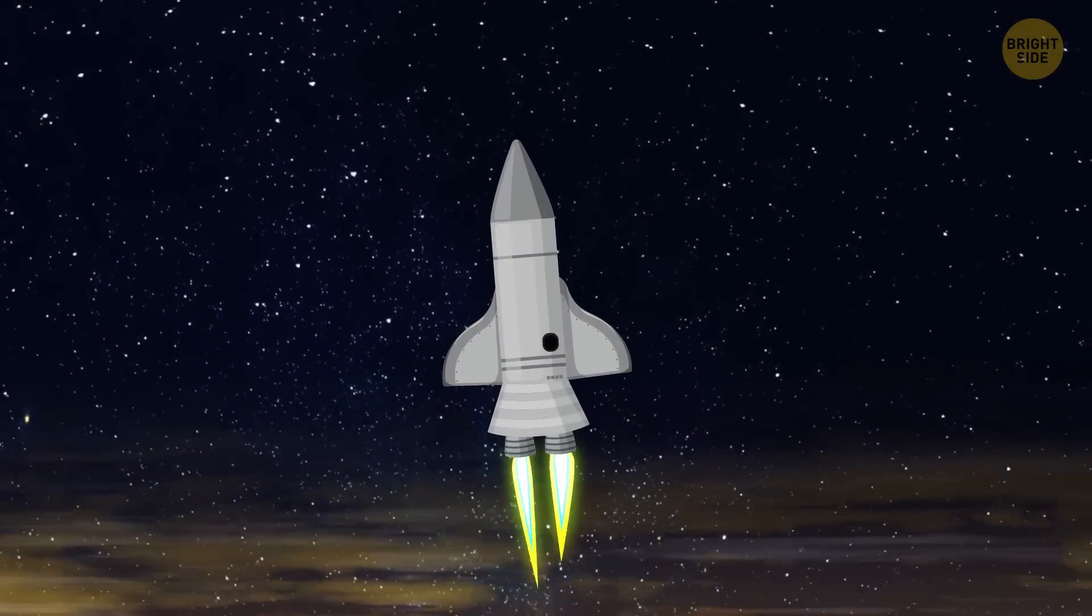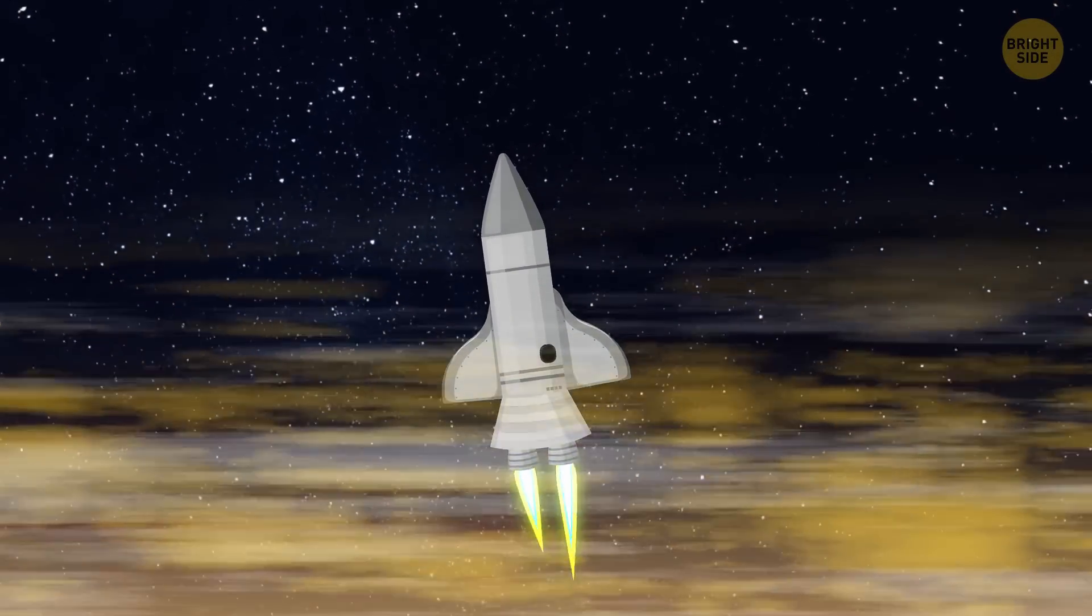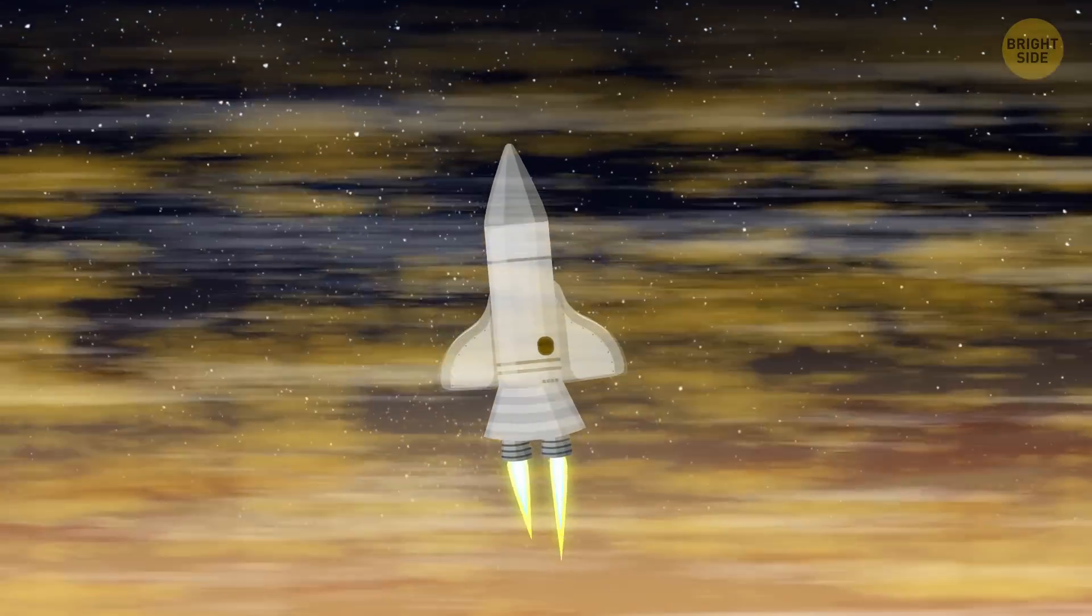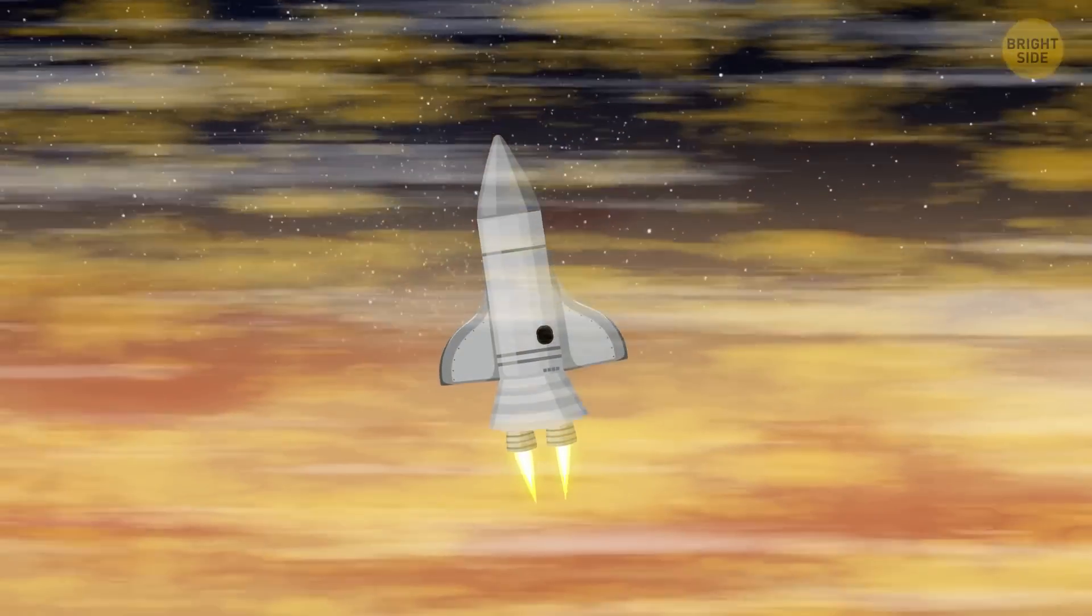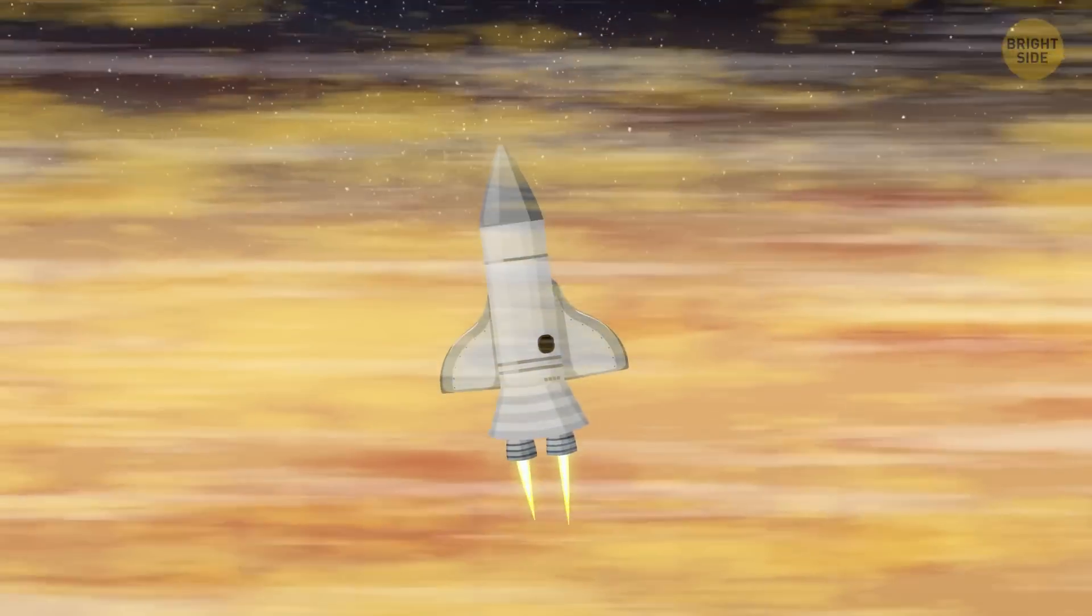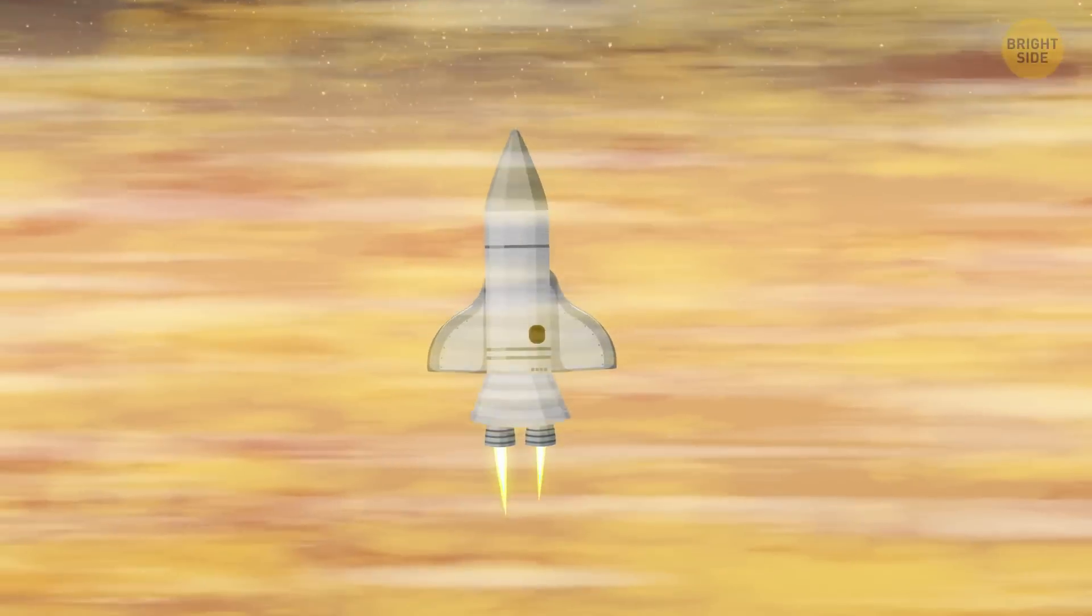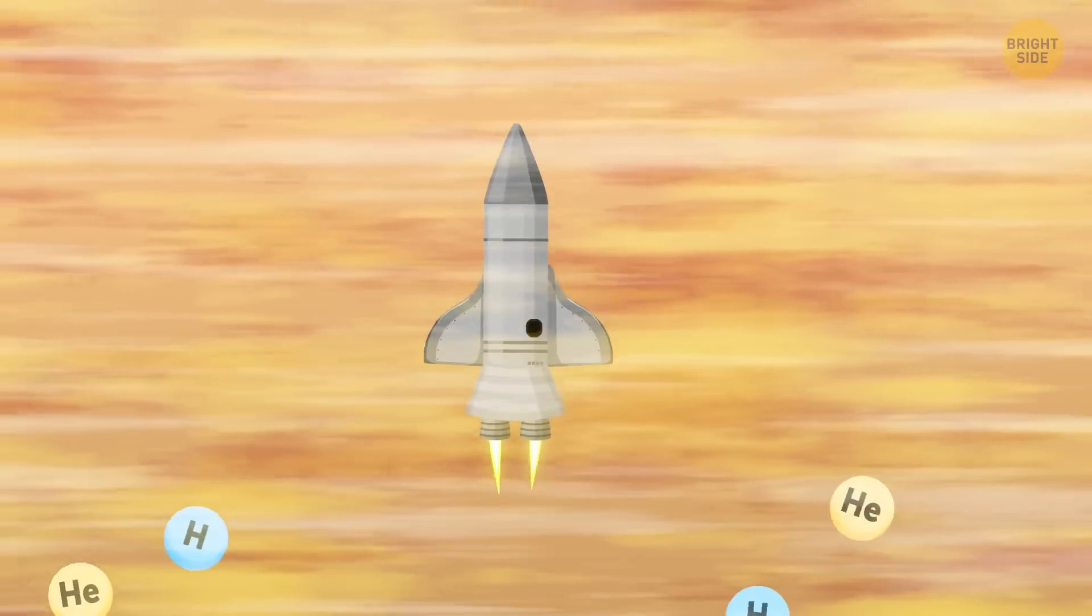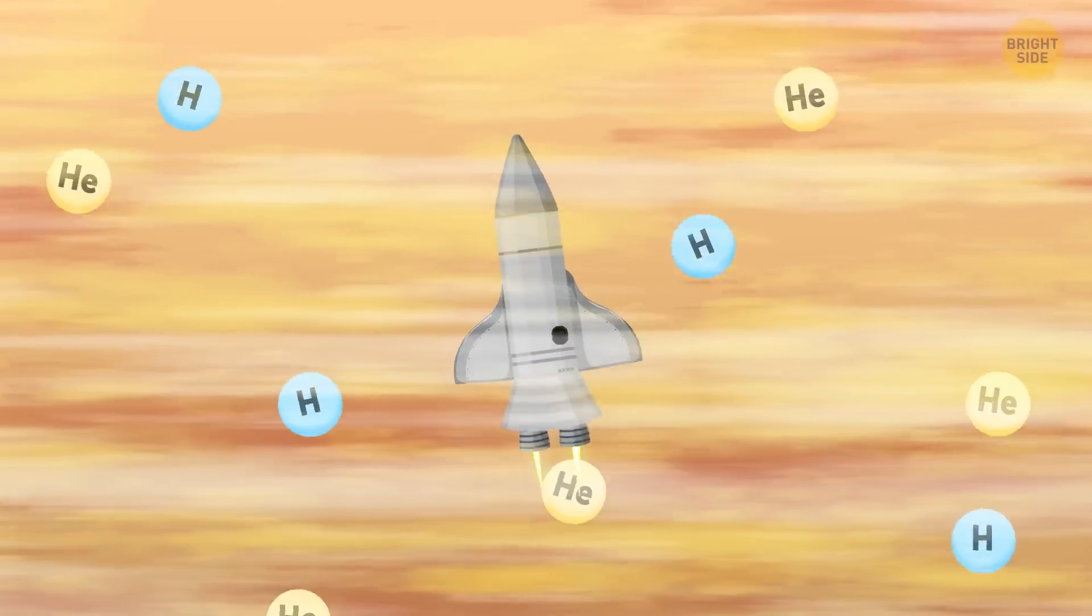While descending, you watch thick brown, yellow, red, and white clouds passing by. Thanks to them, the planet looks colorful and beautifully striped. You keep going deeper toward the center of the planet. Its atmosphere is made up of hydrogen and helium gas.